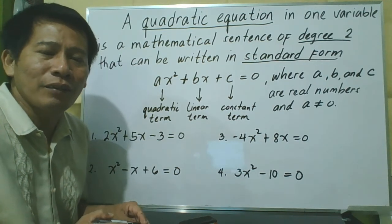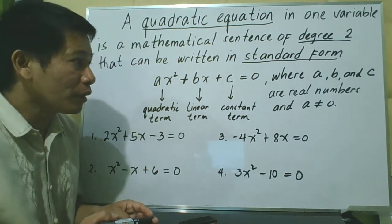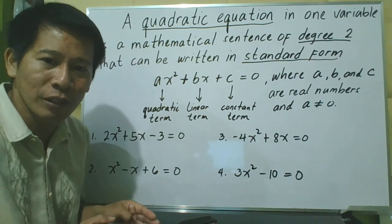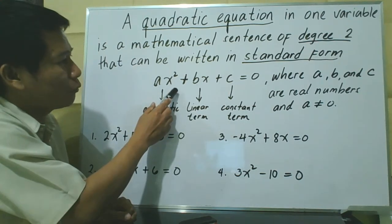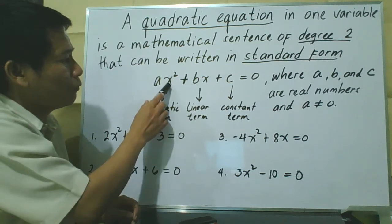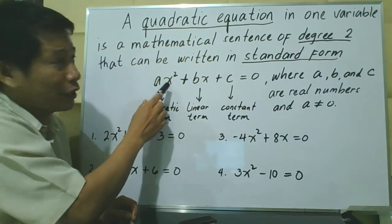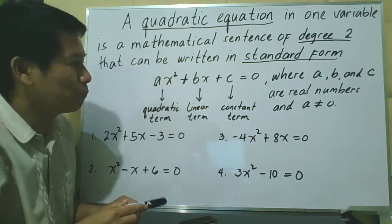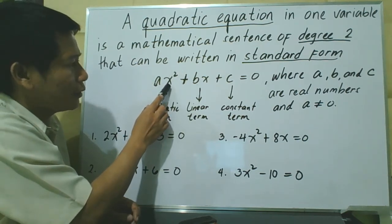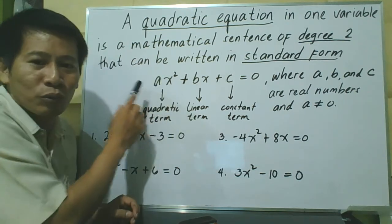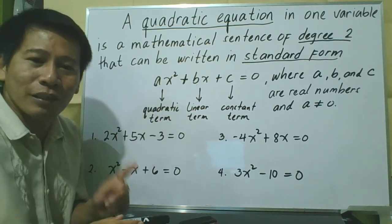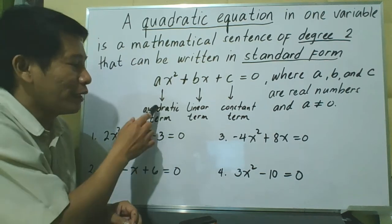What does it mean when we say degree 2? The degree of a term can be identified by the exponent of the variable involved. Let us consider our standard form: ax squared plus bx plus c equals 0. The variable involved is x — one variable x. Our first term is ax squared. The exponent of x is 2, so the degree of this term is 2, or second degree. If the degree of a term is 2, the term is called a quadratic term.